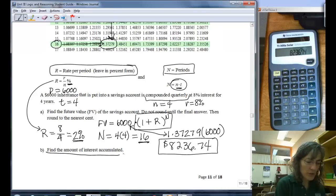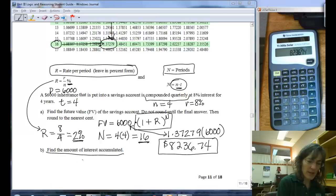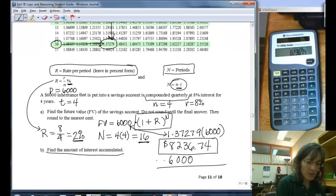Then it says, how much interest did you accumulate? That is just asking, if you start with 6,000 and you end up with 8,000 some, how much of that was interest? Well, it's everything but the initial 6,000 that you had. So you can subtract that off and I will get $2,236.74. That's the amount of interest accumulated.